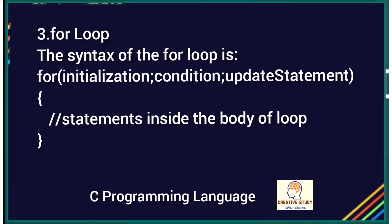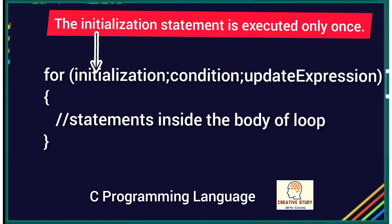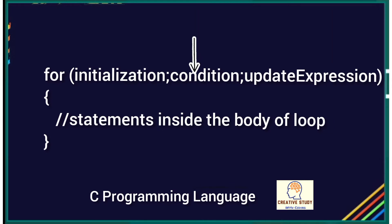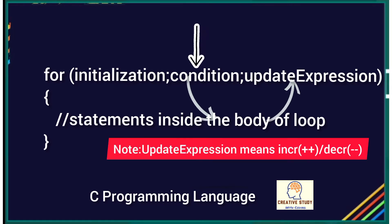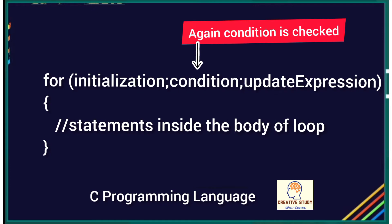This is the syntax for the for loop. The for loop allows you to give initialization, condition, and update statement inside the for parentheses. It can be used in two ways: simple for loop and nested for loop. First the initialization statement is executed — it executes only once. After that the condition is checked, and if it evaluates to true, statements inside the body of the for loop are executed and the update expression is updated.